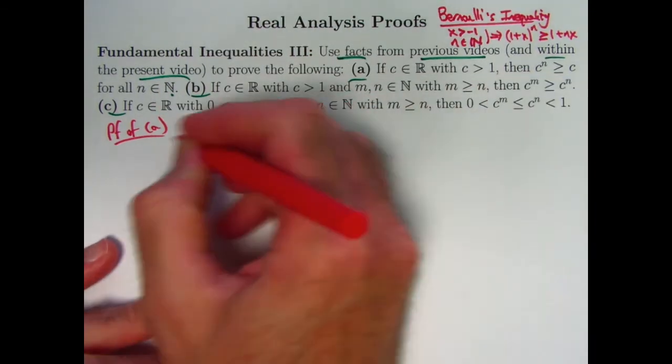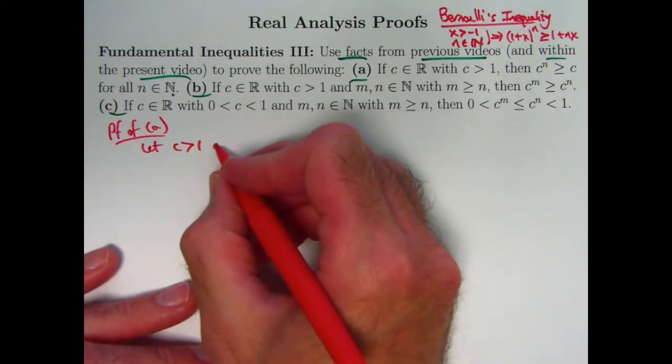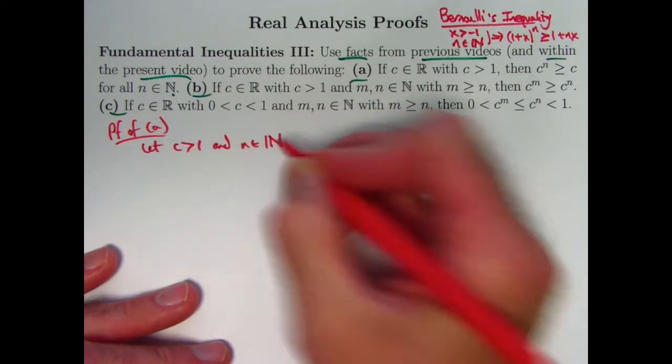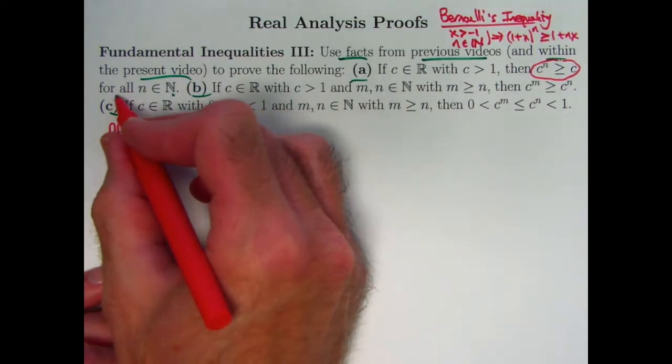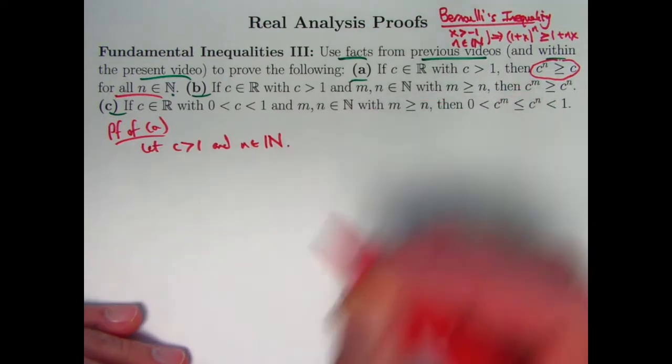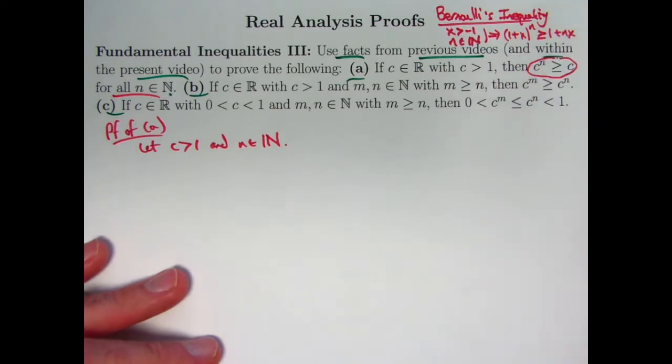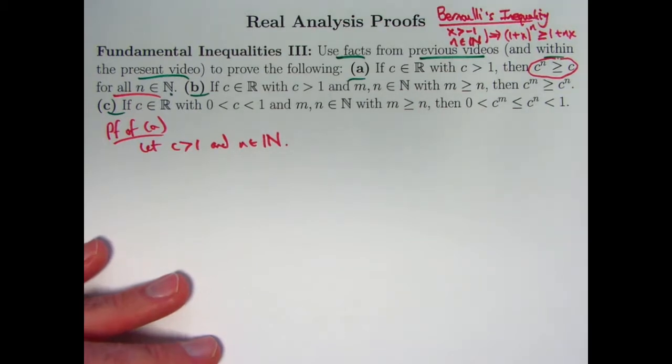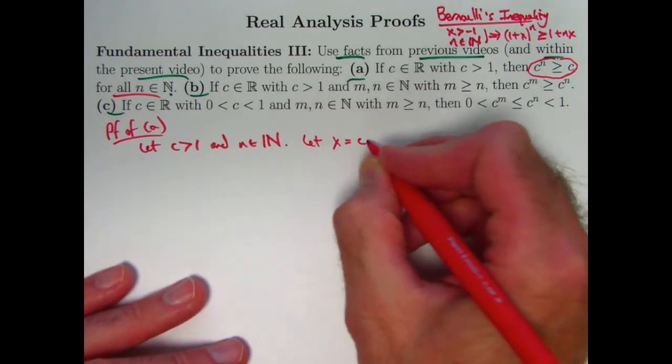So let's finish this proof here. Let's go ahead and start it by writing the assumptions. Let c be bigger than one. It's implicit in writing that really, that c is a real number. And let n be an arbitrary natural number. If I can show this inequality is true for an arbitrary natural number, then it will be true for all natural numbers. And I can avoid induction in this problem. I would like to apply Bernoulli's Inequality. Maybe c should equal 1 + x. Not obvious that that's going to work.